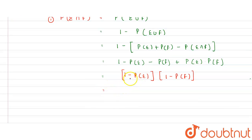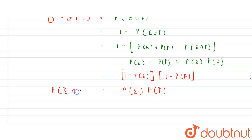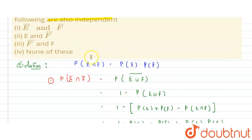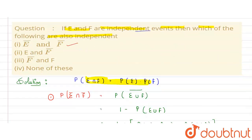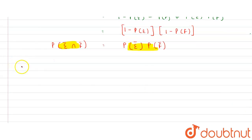So we get P(E') · P(F'), which equals P(E' ∩ F'). Since we can represent P(E' ∩ F') as the product P(E') · P(F'), it means E complement and F complement are also independent events.